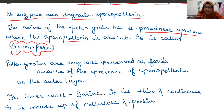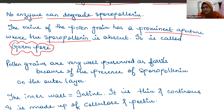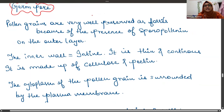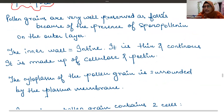The continuity of the exine is not entire — there is one place where sporopollenin is absent, and that particular place is known as the germ pore. It is a very prominent aperture, easily visible and not hidden.